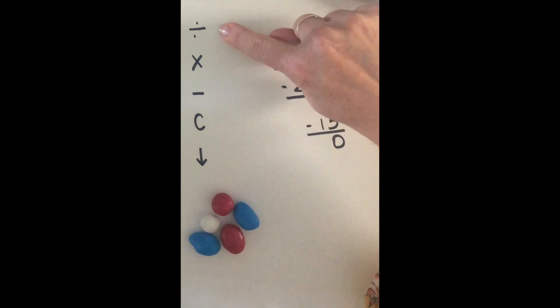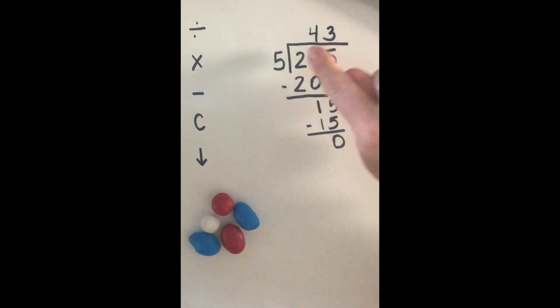Start back at the top with divide. 15 divided by five equals three. Multiply. Three times five equals 15. Subtract, and you get zero.